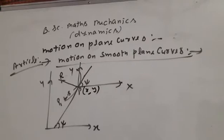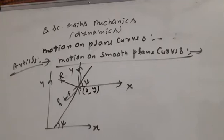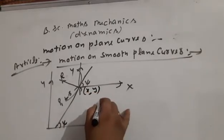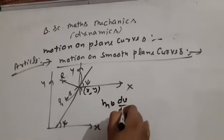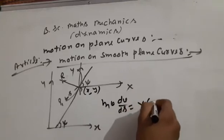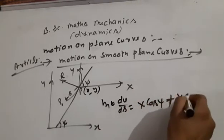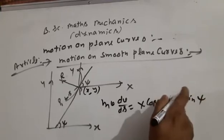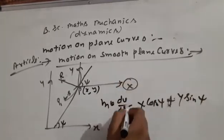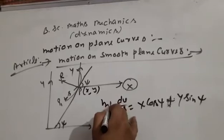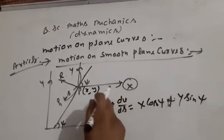Capital X and capital Y are the components of force acting along the coordinate axes — X component along the x-axis and Y along the y-axis. On resolving forces along the tangent at P, we get: m·v·(dv/ds) = X·cos(ψ) + Y·sin(ψ).